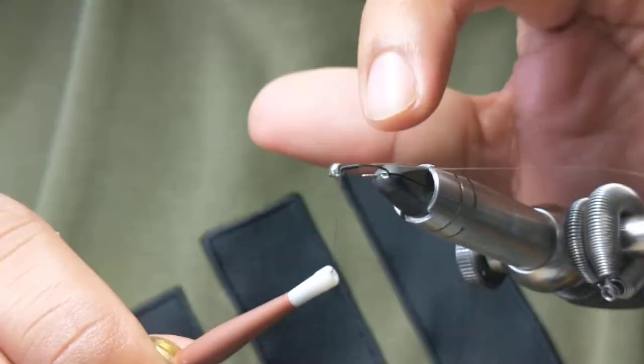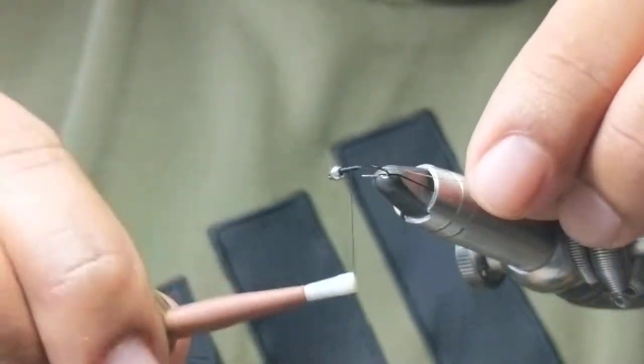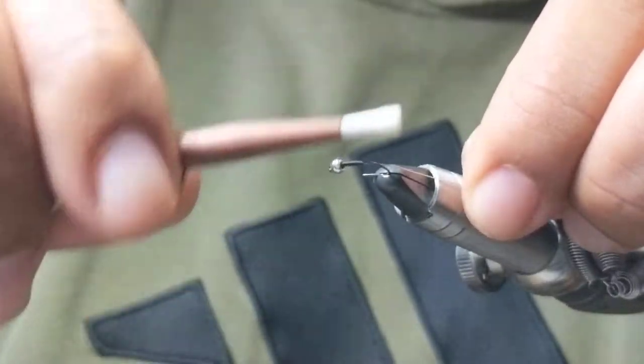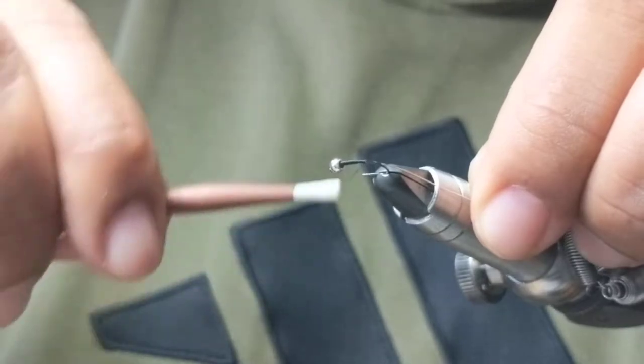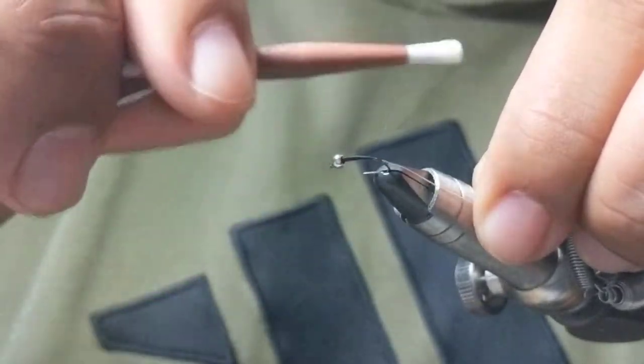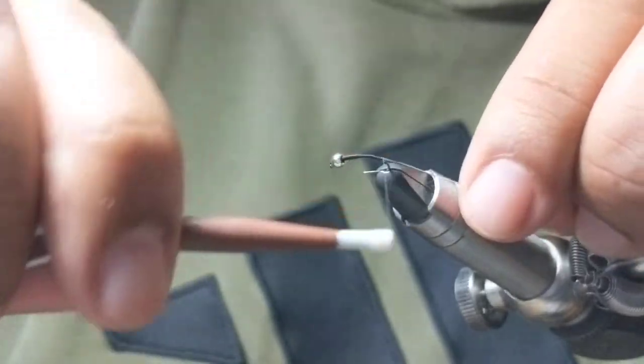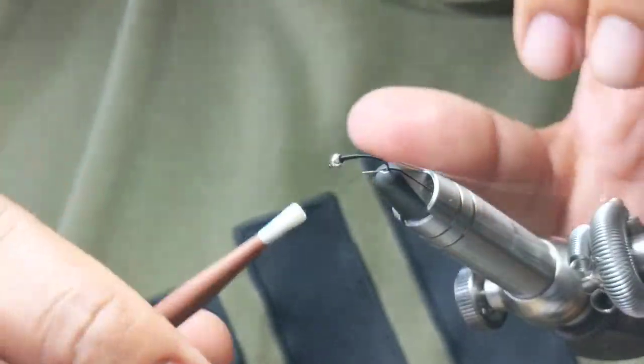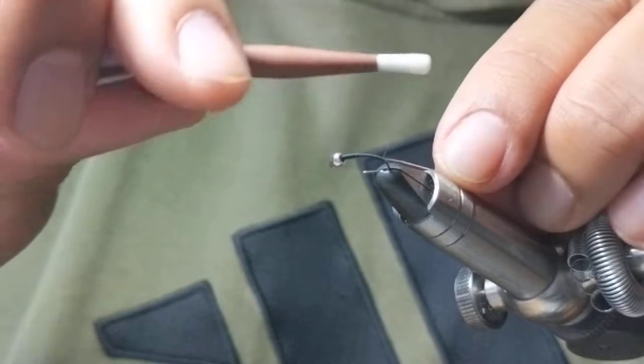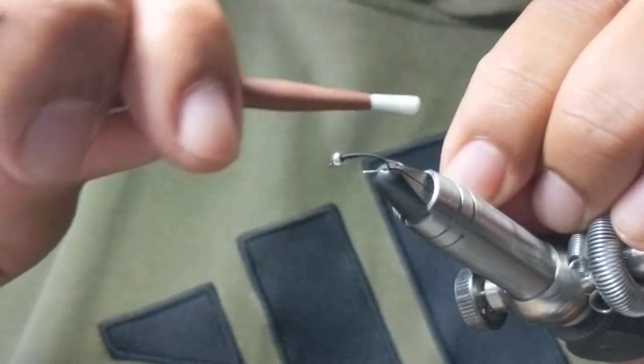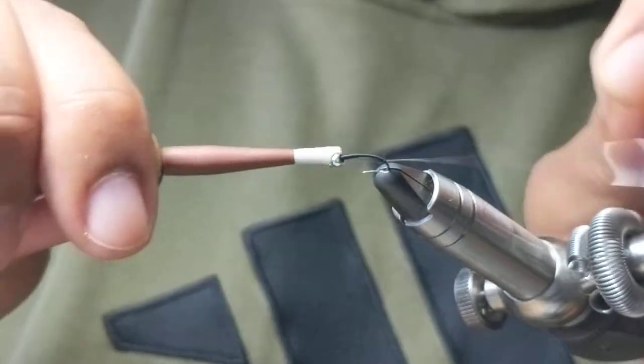Work my way back down, keeping the wire as close to the underbody of the hook as possible. Now I'll do touching wraps to where I think might look nice. I like my midges to really get down to the bend of the hook here, and I'll work my way back up.